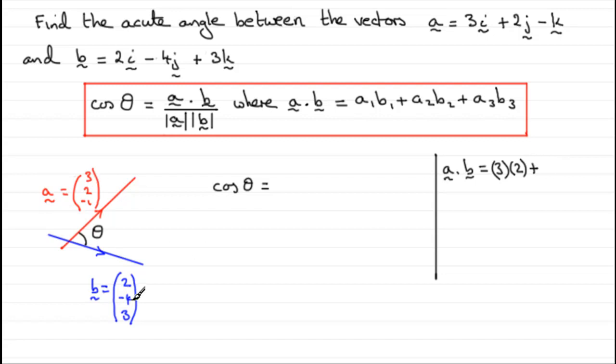Plus, and then we've got 2 times minus 4, 2 times minus 4, and then plus, and we've got minus 1 times 3, minus 1 then times the 3. And if we work that out, we've got 6 minus 8 minus 3, which comes to minus 5. So A dot B is minus 5.